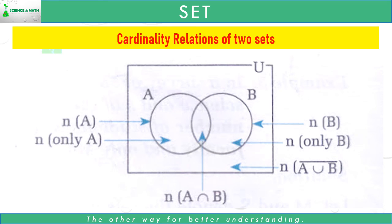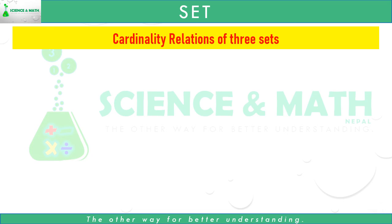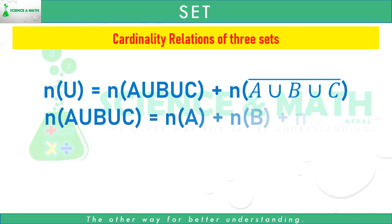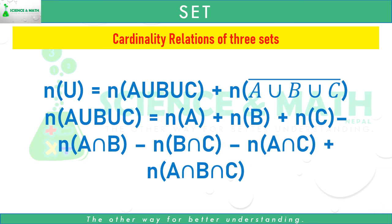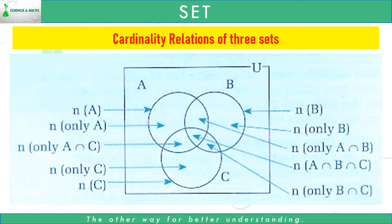We can observe this figure and find out the relations by ourselves. Now let's see cardinality relations of 3 sets. In 3 sets, n(U) = n(A∪B∪C) + n(A∪B∪C)'. Where n(A∪B∪C) = n(A) + n(B) + n(C) − n(A∩B) − n(B∩C) − n(A∩C) + n(A∩B∩C). By observing the Venn diagram and its parts, we can further understand the relationships between these terms.